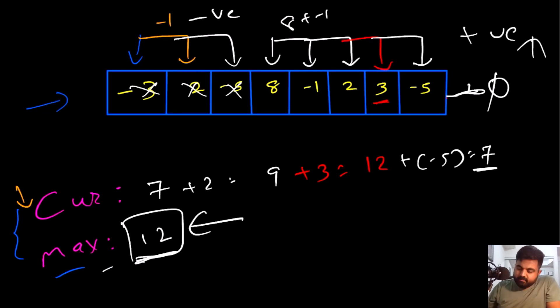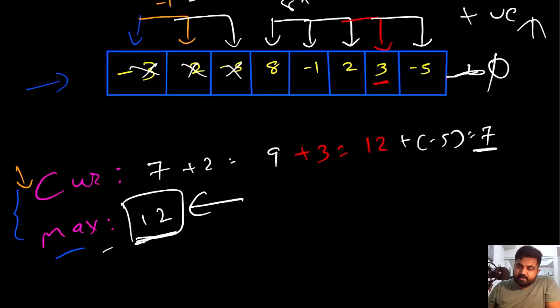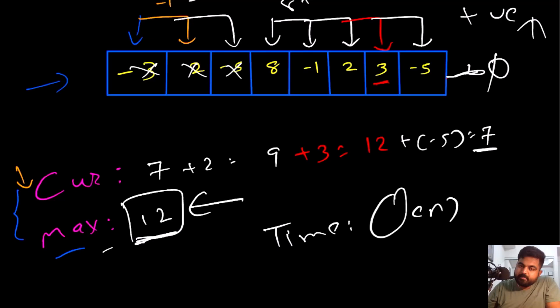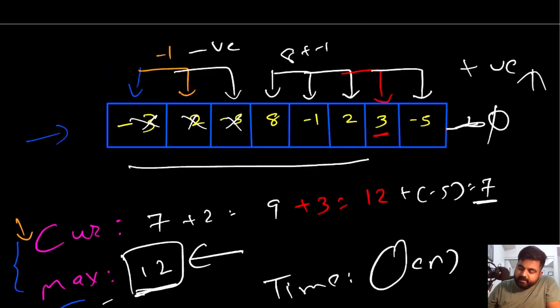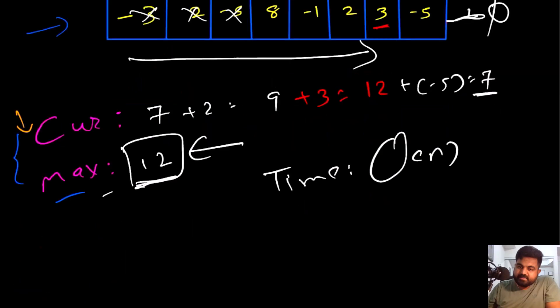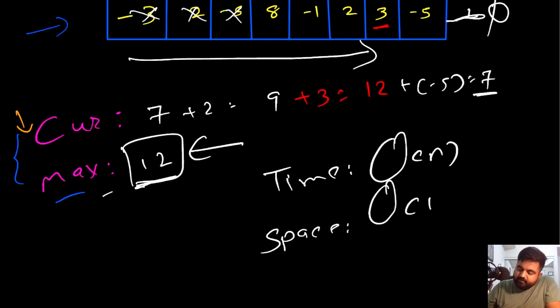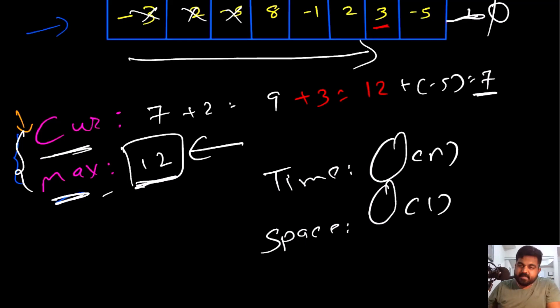This is the most optimal approach to solve this problem. The time complexity is O(N) because we iterate over every single value in the given array. The space complexity is O(1) or constant space, because apart from storing these couple of variables, we are not using any additional space. That's why space complexity is very minimal.